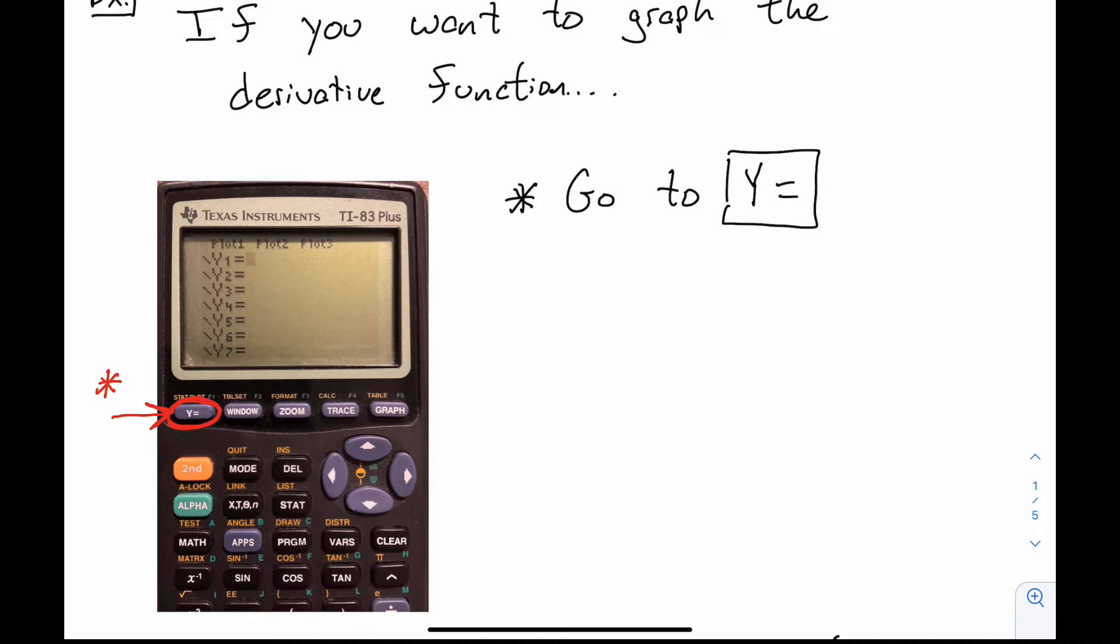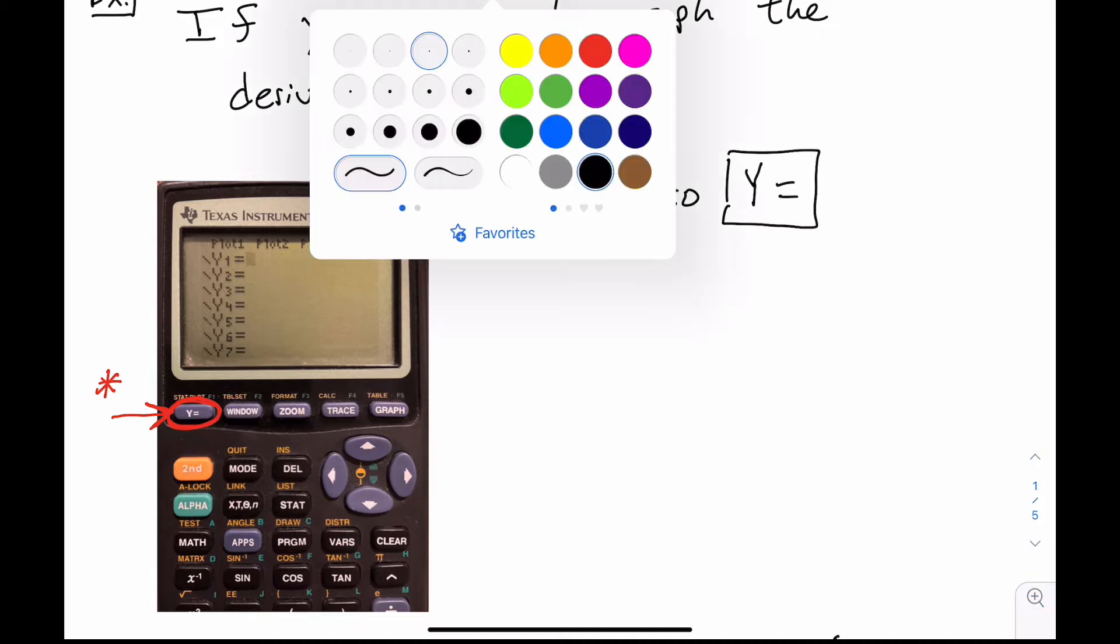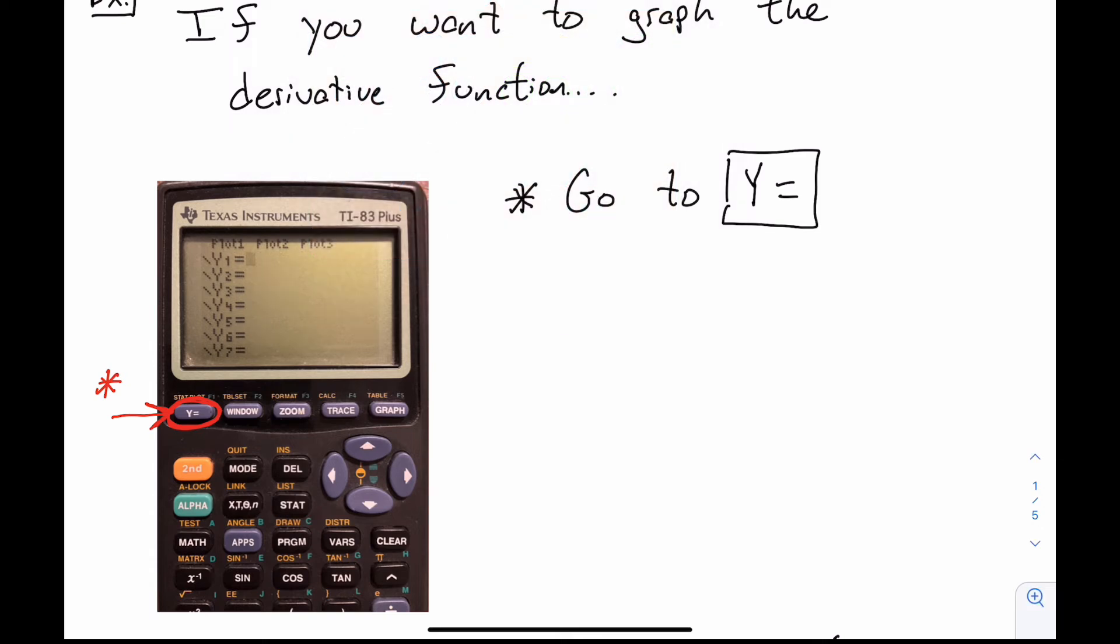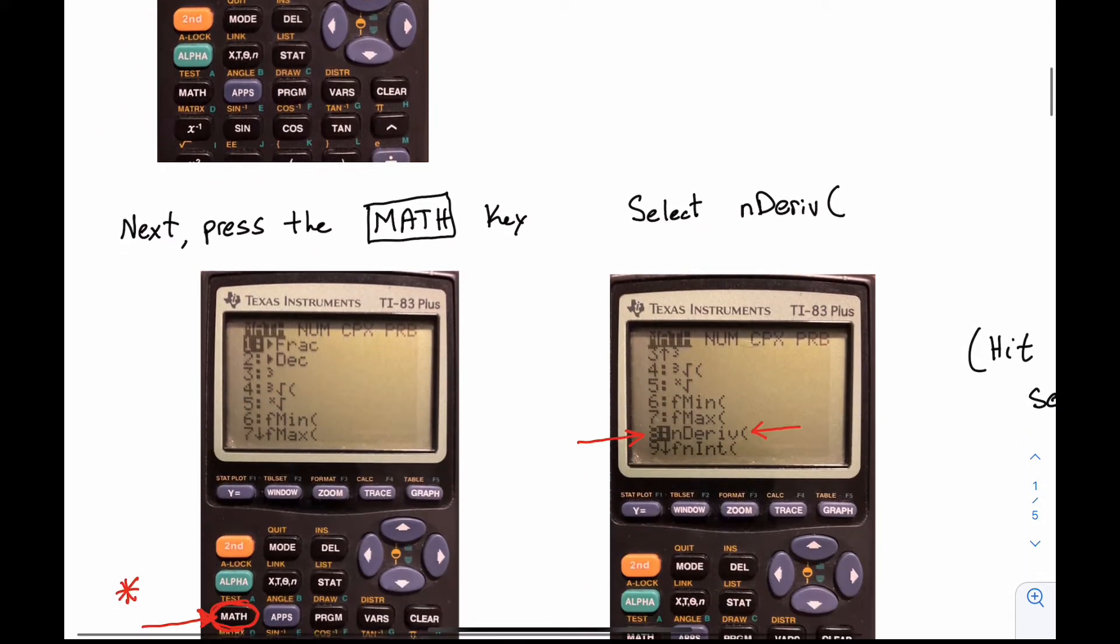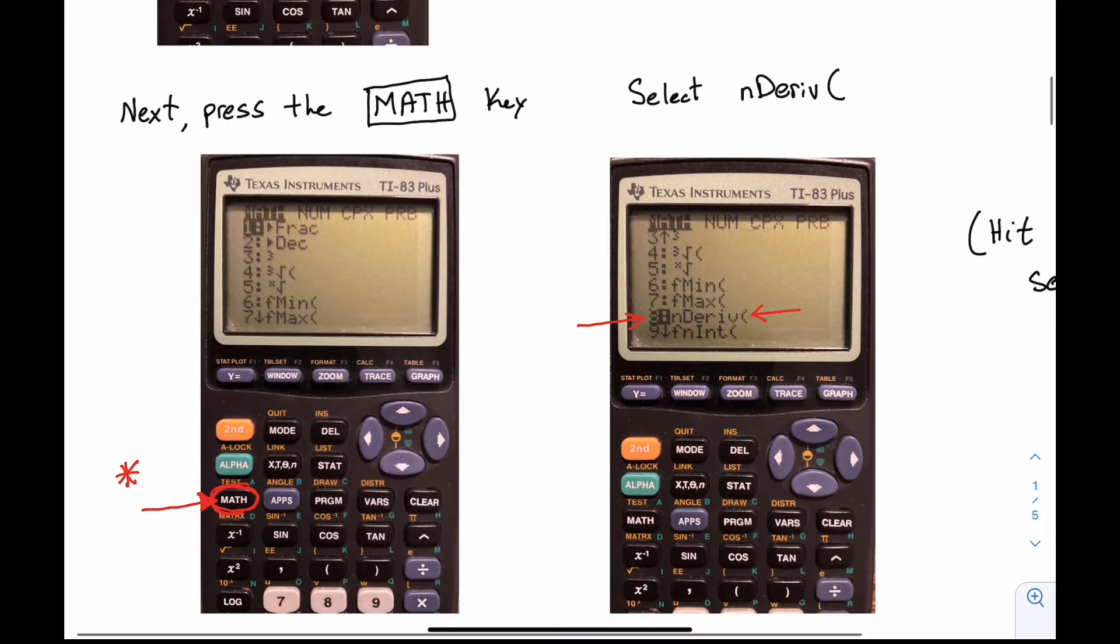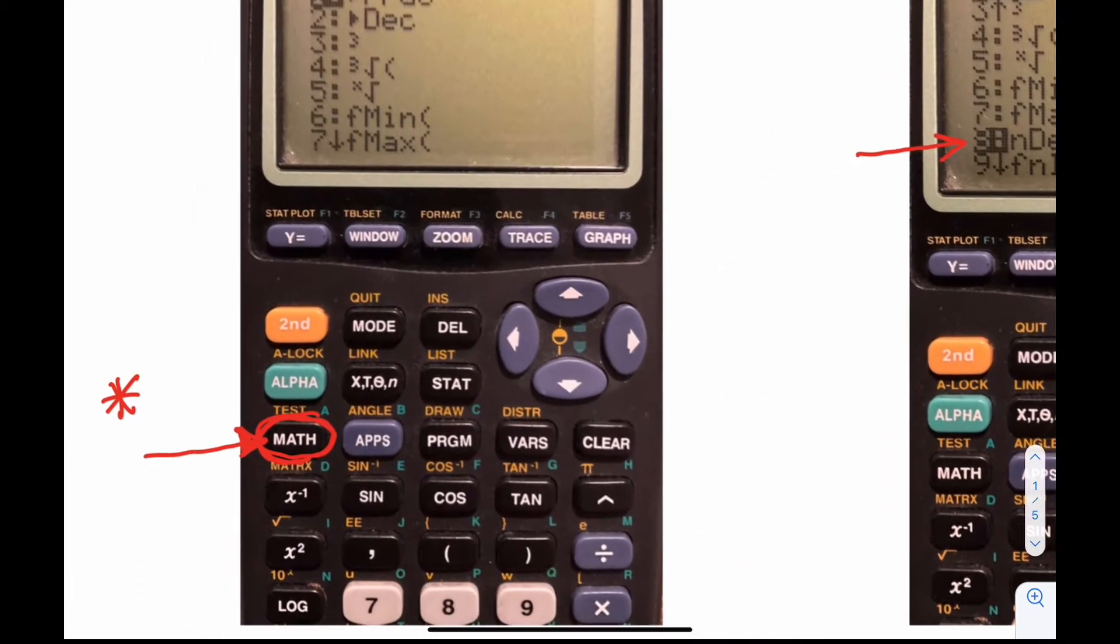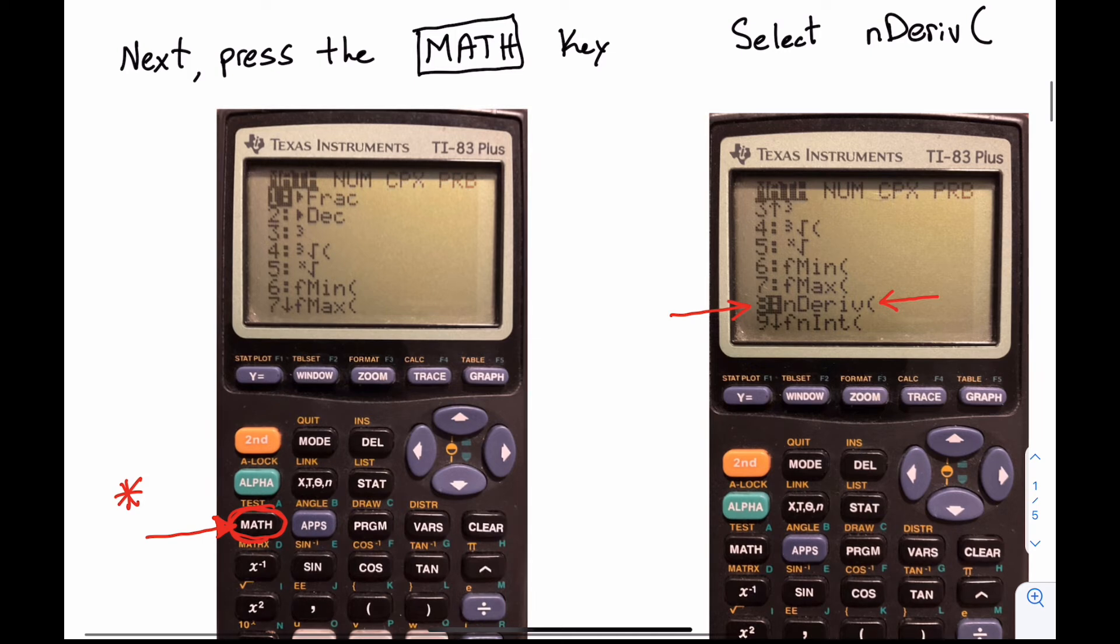Also make sure that you don't have any of the plots on, so you don't want these plot one and plot two, plot three. You don't want those on. You want to make sure none of those are highlighted. So once you're there, you're going to press the math key, so I'm over here on the left, you want to press that math key right there when you're in Y equals.